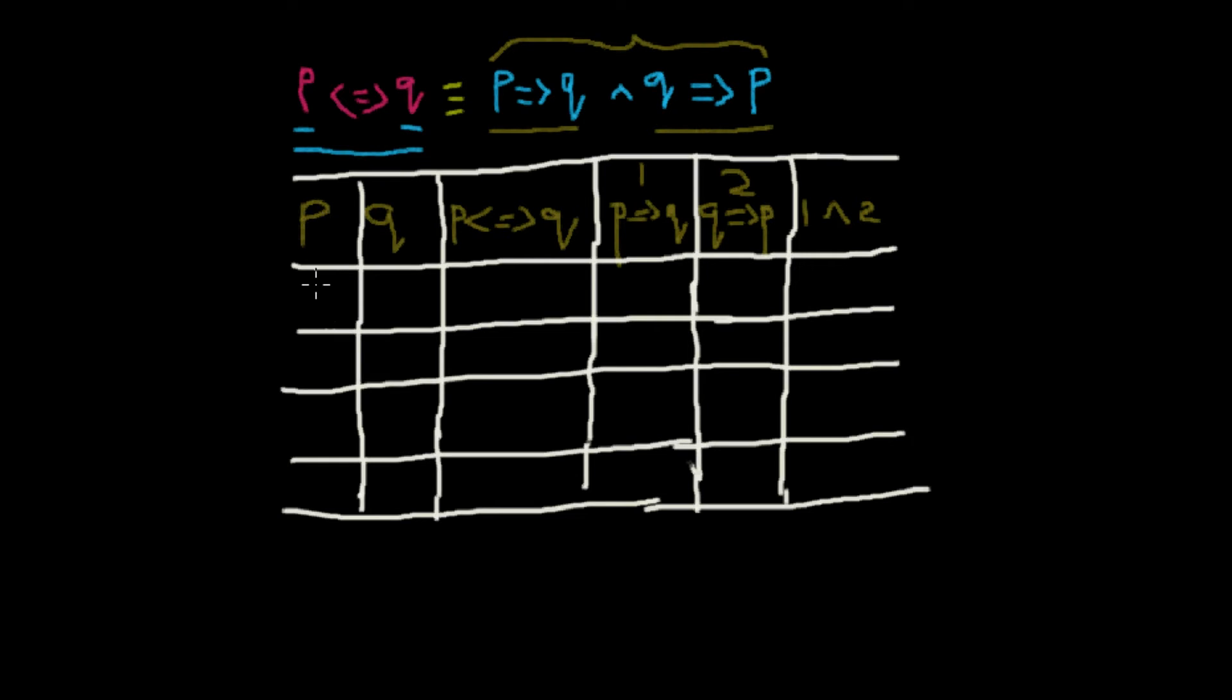For example, we will have truth value for P. So we'll start with P and call it true, true, false, false. Q is true, so we will just write all possible combinations and you can see a pattern here.